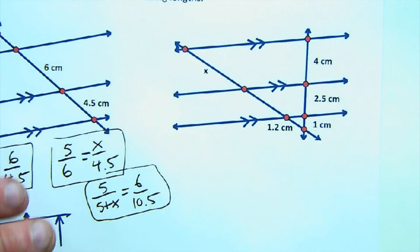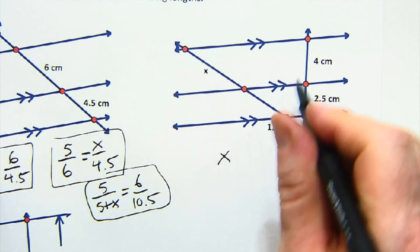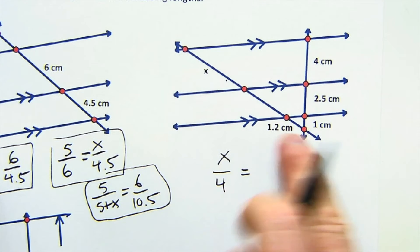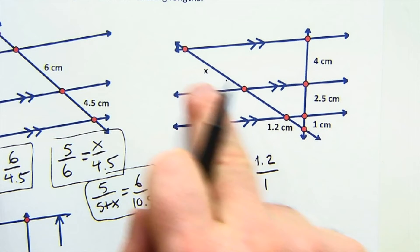I'm just showing you there's lots of ways to do it. Here I've got an X over here, so I don't know. X is to 4, I see that as 1.2 is to 1. 1.2 is to 1 as X is to 4. Not hard at all.